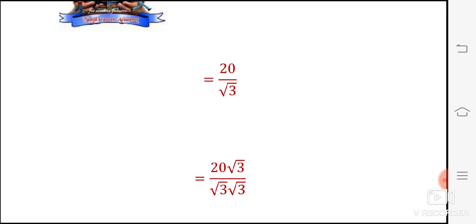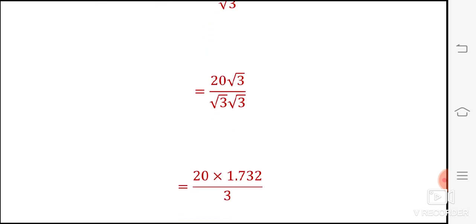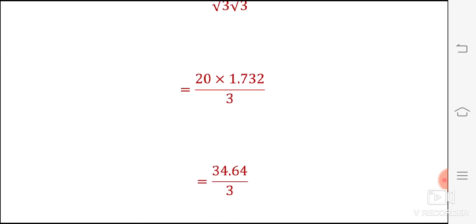Rationalizing the numerator, we get 20 root 3 divided by root 3 into root 3. So now 20 into value of root 3 is 1.732 divided by root 3 into root 3, which is 3, which is equal to 34.64 divided by 3.